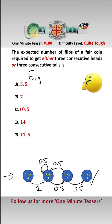We can define E_ij to be the expected number of steps from state i to state j. What we want to find is E_03, i.e. the expected steps from state 0 to state 3.